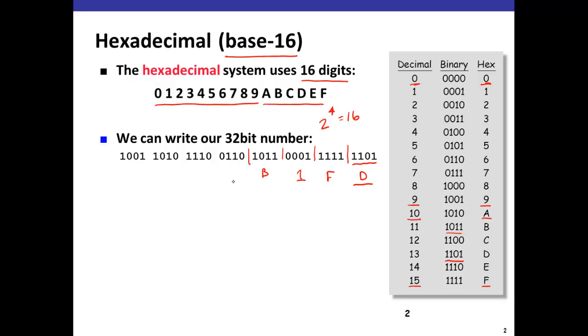1011 is B. 110 is the value 6. 1110, that's 1 less than F so I know that has to be E. 1010, that's binary for 10 and 10 is 1 after 9 so that has to be A, and 1001 is 9. So here is the hexadecimal encoding of this 32-bit binary number.